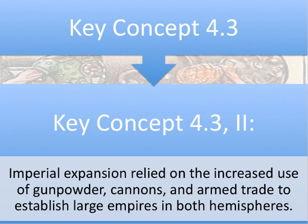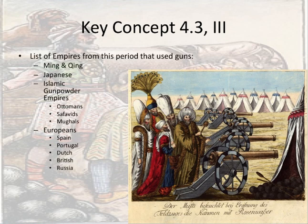Key concept 4.3, Roman numeral 2 says imperial expansion relied on the increased use of gunpowder, cannons, and arms trade to establish large empires in both hemispheres. Many of you have talked about Islamic gunpowder empires — they get that name for a reason: they used guns. Here's a list of empires from this time period that used guns: it wasn't just those Islamic empires, but the Ming and Qing both used guns, the Japanese used guns, the Ottomans, Safavids, and Mughals used guns, and the Europeans — Spain, Portugal, the Dutch, the British, Russia — they all used guns too. As gunpowder traveled from China to the rest of the world, guns were refined and made more efficient.